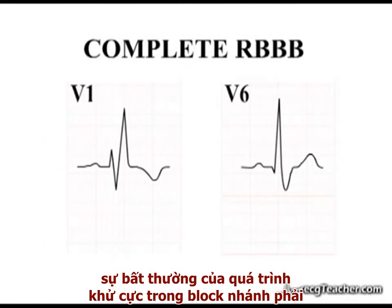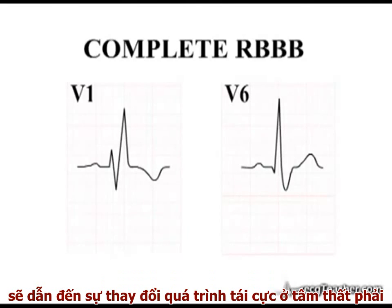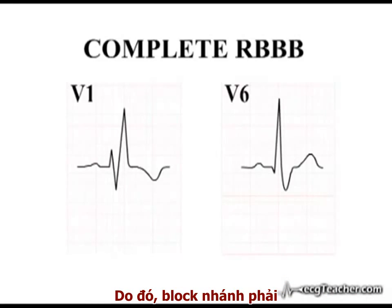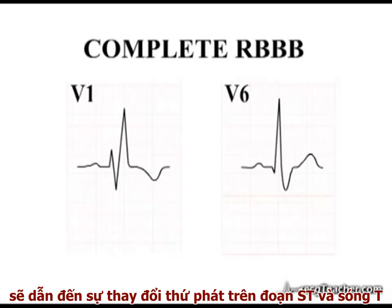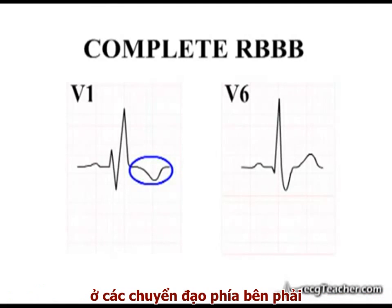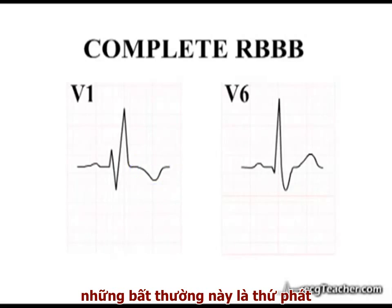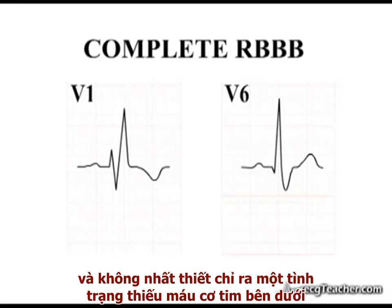The highly abnormal pattern of depolarisation in right bundle branch block results in an altered pattern of repolarisation in the right ventricle. Right bundle branch block is therefore associated with ST and T wave abnormalities in the right-sided chest leads. These abnormalities are a secondary phenomenon and do not necessarily indicate underlying ischaemia or strain.